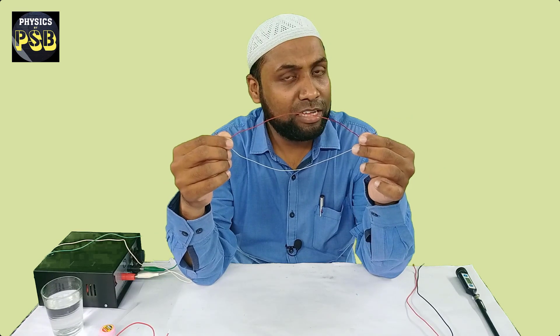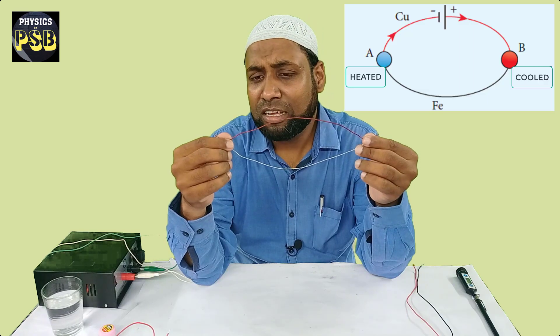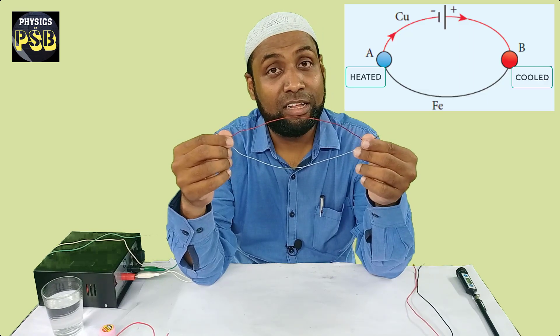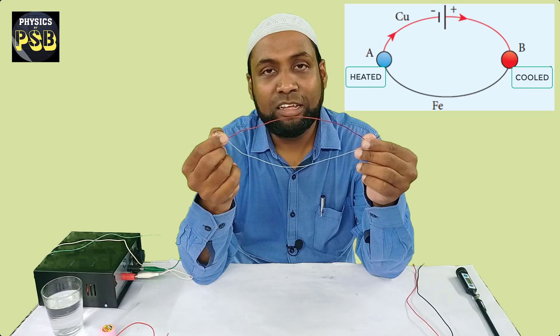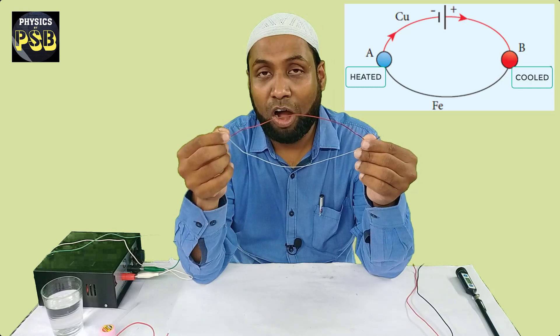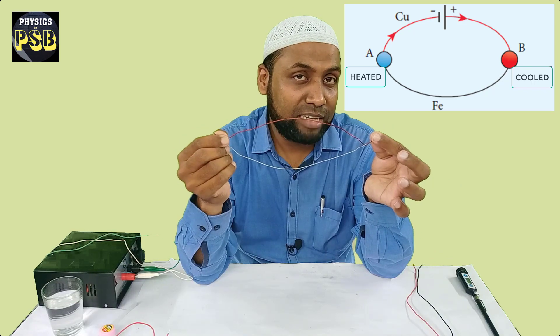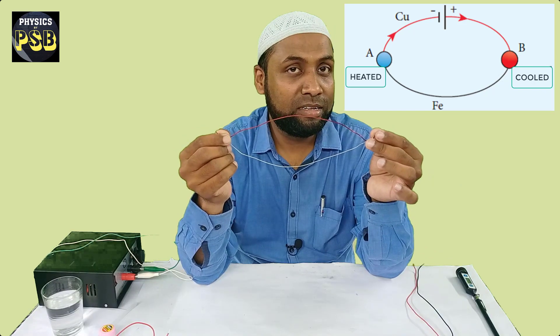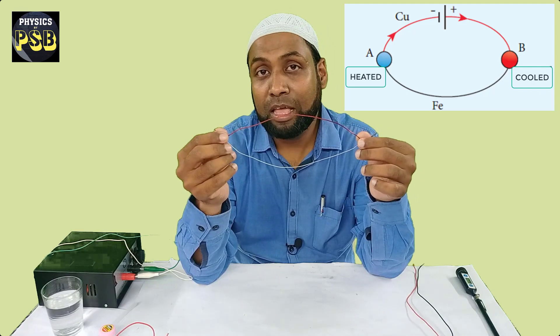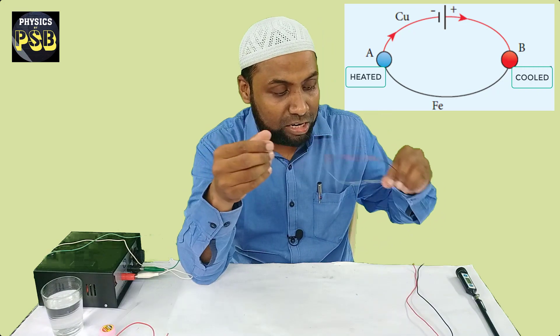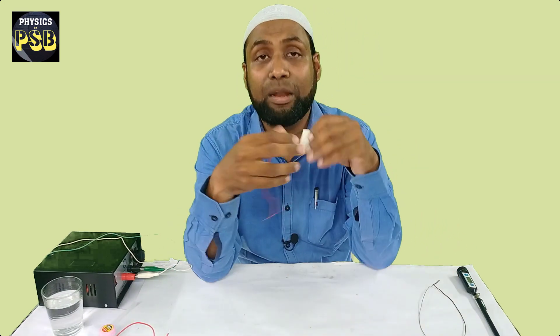This phenomenon is referred as Peltier effect. If we reverse the direction of flow of current, then this junction becomes hot and this junction becomes cold. So Peltier effect is a reversible effect.